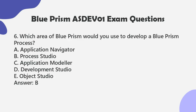Question 6: Which area of Blue Prism would you use to develop a Blue Prism process? a. Application navigator. b. Process studio. c. Application modeler. d. Development studio. e. Object studio. Answer: B.